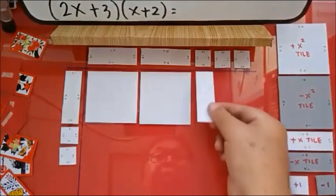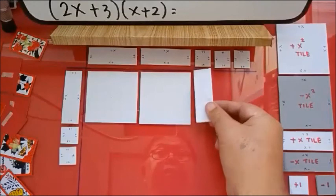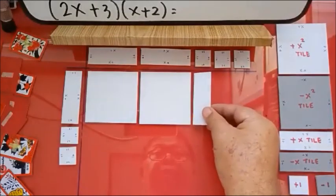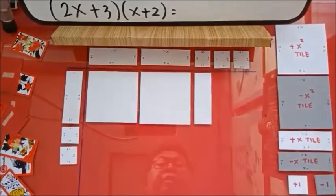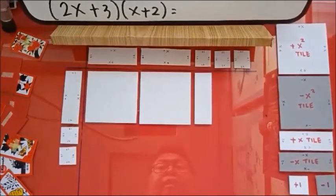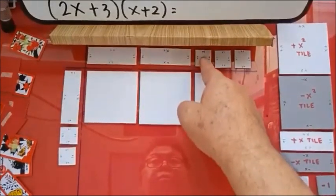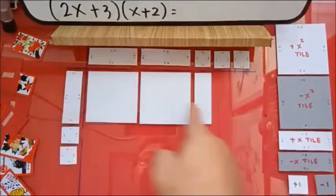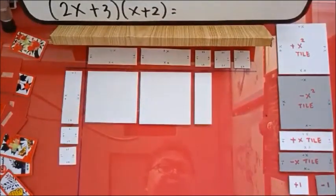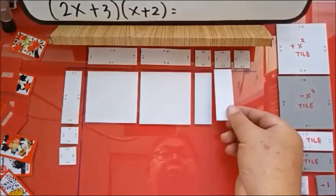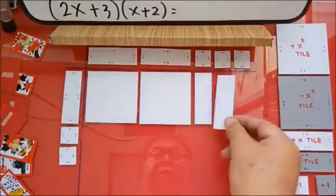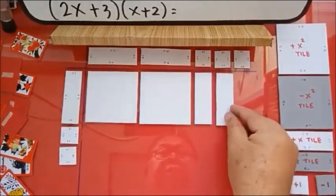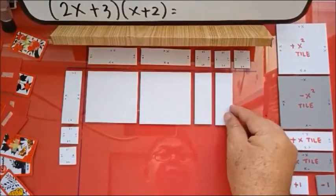Now, this edge plus this edge will become the longer rectangle. Positive times positive will become positive. Then this edge times this edge — this will also become the longer rectangle.